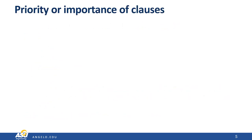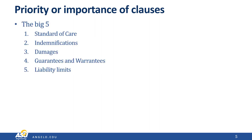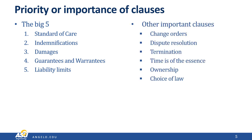Let's prioritize the list of terms and conditions. I'm going to give you the big five that you need to be most concerned about. The first is the standard of care, second is indemnifications, third is damages, then guarantees and warranties, and finally limits of liability. The other ones we'll cover today are change orders, dispute resolution clauses, termination clauses, time is of the essence, ownership, and choice of law. These are all really important, but the big five are the big five.